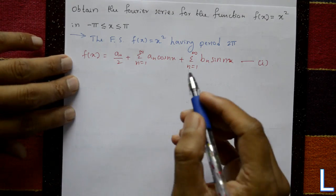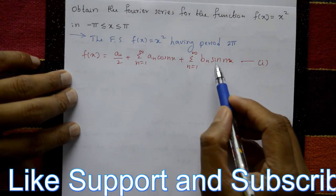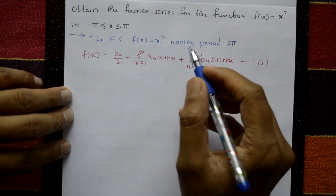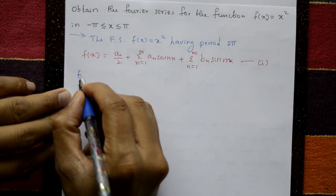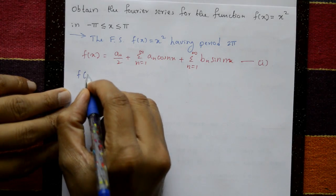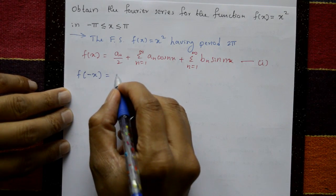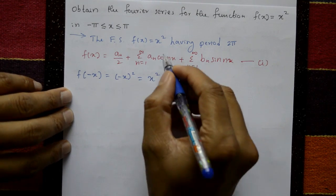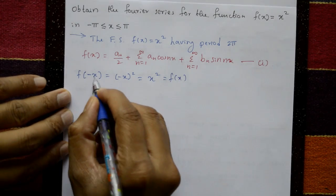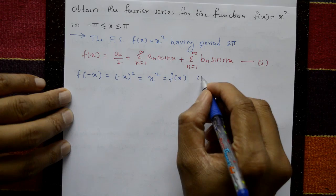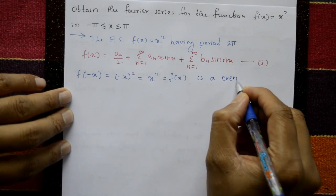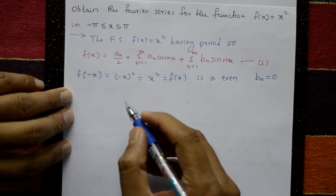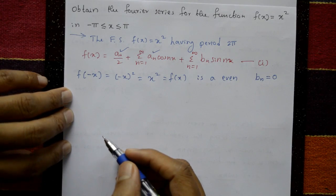Before finding a₀, aₙ, bₙ, we first check if the given function is odd or even. Put x = -x: f(-x) = (-x)² = x² = f(x). Since f(-x) = +f(x), this is an even function. For an even function, bₙ = 0, so we only need a₀ and aₙ.